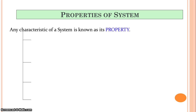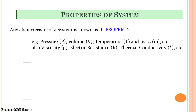A very important point: what is a property of a system? Any characteristic of a system is known as a property. Examples include temperature, volume — say one cubic meter or ten cubic meters — pressure, say two bar or three bar, mass, viscosity of a fluid, electric resistance, and thermal conductivity. There are many examples of properties of a system.